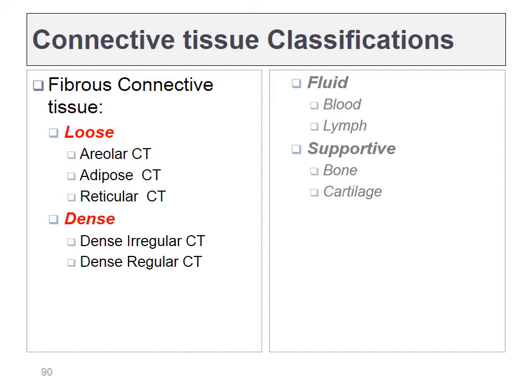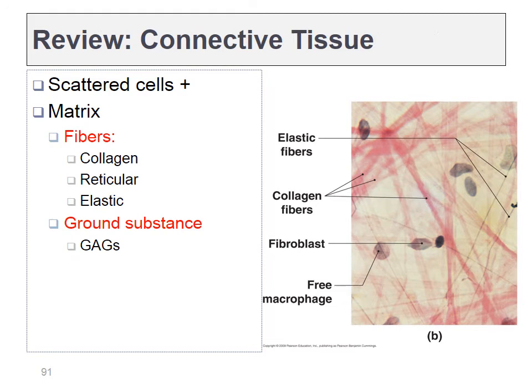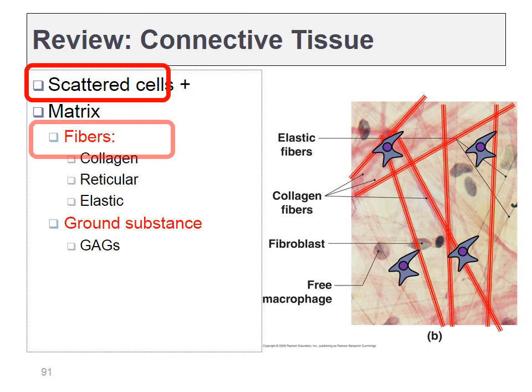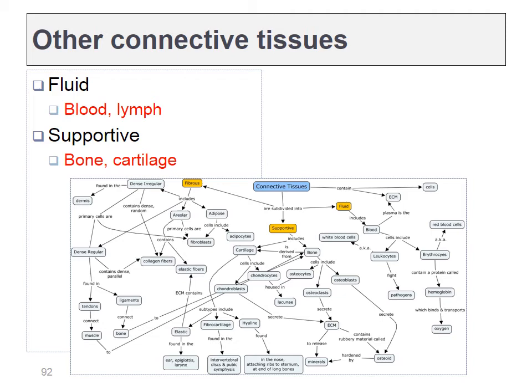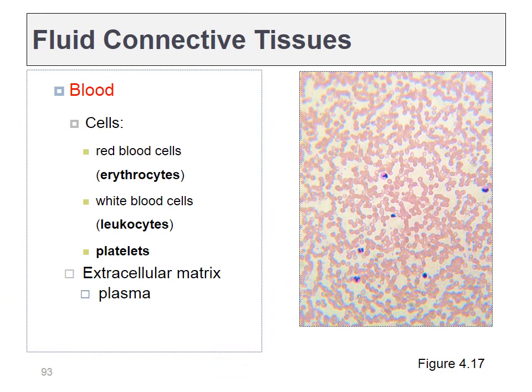To review, the basic connective tissue types are: areolar, adipose, reticular, dense regular, and dense irregular. A connective tissue has some cells — mostly fibroblasts — that make different types of fibers including large collagen fibers, smaller reticular fibers, and elastic fibers. The rest of the material is ground substance made of glycoproteins that attract water to form a gel. The other connective tissues have all of these same substances, just not as obviously.